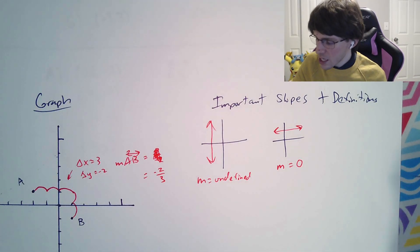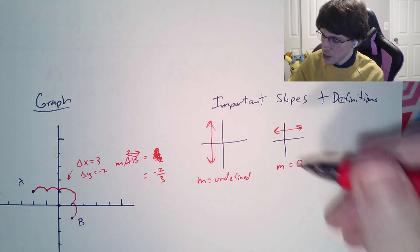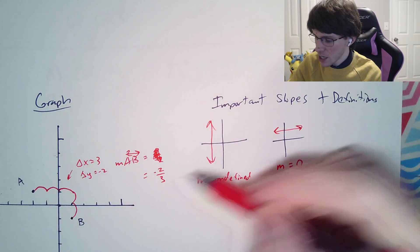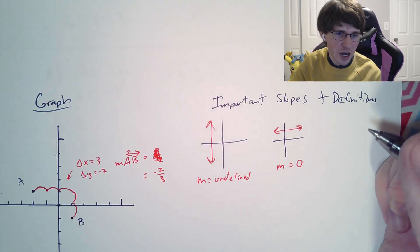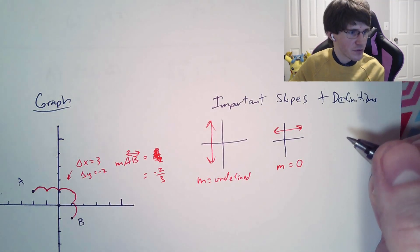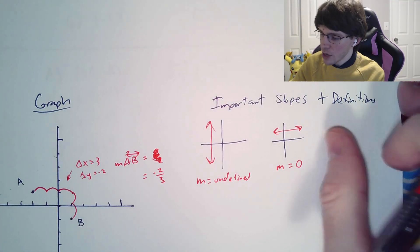Anyways, our slope is undefined. And because our slope is undefined, every single time we're dividing by a change in x, which is nothing, you're dividing by 0, and you're not able to divide by 0.